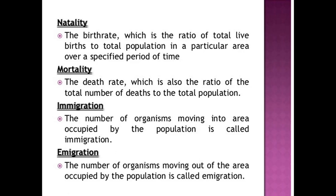After class, make sure to write the definitions of all four: natality, mortality, immigration, and emigration — because these are the four important factors that affect population density and population size. Natality is basically the birth rate — the total number of live births in a particular population in a specified period of time. The total number of deaths in the total population in a specified period of time is mortality.